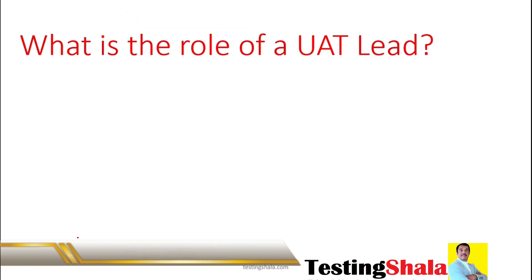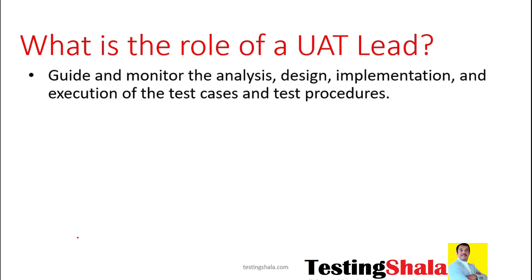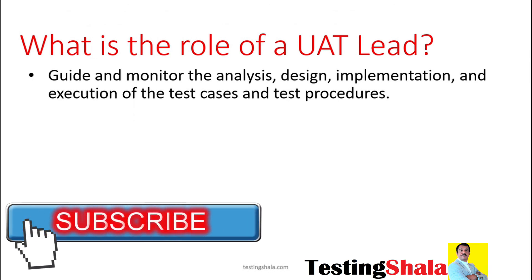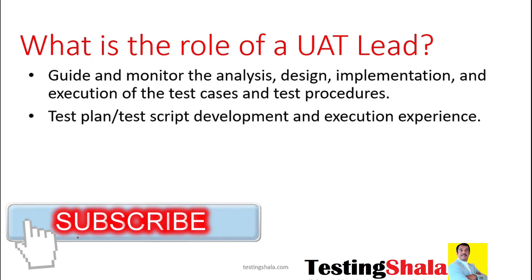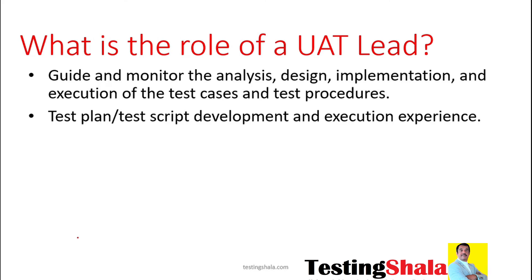What is the key role of a UAT test lead? The main role of a UAT test lead is to guide and monitor the overall analysis, design, implementation, and execution of test cases and test procedures in UAT testing. The test lead should also plan and perform script development, and sometimes execute the scripts as well.